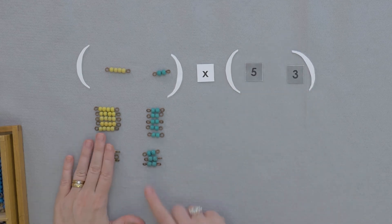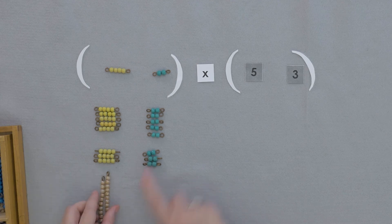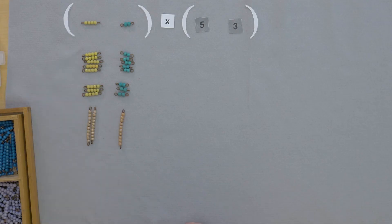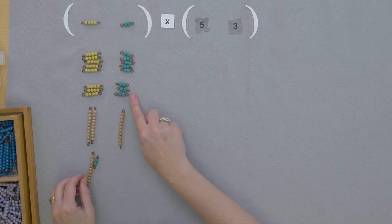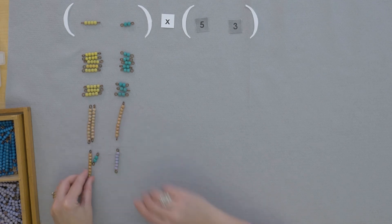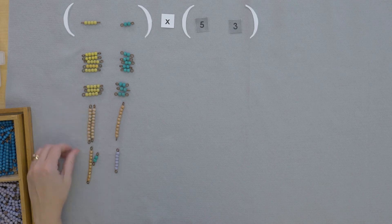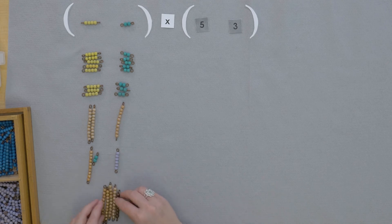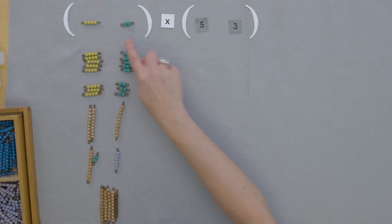Let's calculate the values of each of these. Here we've got 20. We have 10. Here we've got 12 and 6. What does this equal all together? We've got 10, 20, 30, 48. So four plus two times five plus three equals 48.